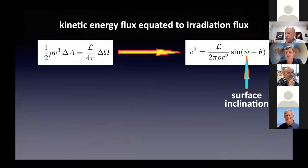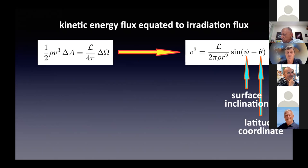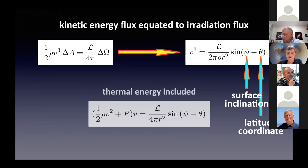The inclination of the surface of the disk and the latitude as seen from the central star then basically determine the velocity with which the flow starts. Of course, you also have to include the thermal energy, and finally you end up with this particular equation that tells you the initial conditions.